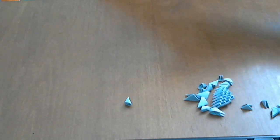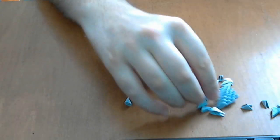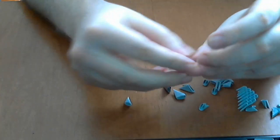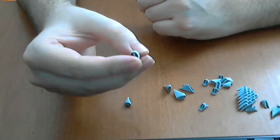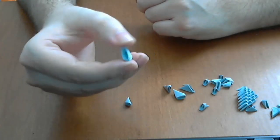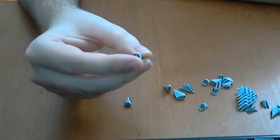For making this model we will use 3D Origami pieces. This is a 3D Origami piece. This is a small piece. You will obtain 64 pieces like this from an A4 sheet of paper.